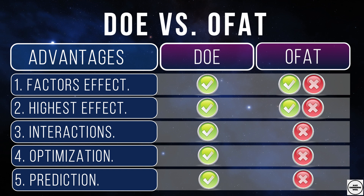We now know the difference between the one factor at a time and DOE. In the next lecture we'll learn a little bit more about the design of experiments method. See you in the next lecture.